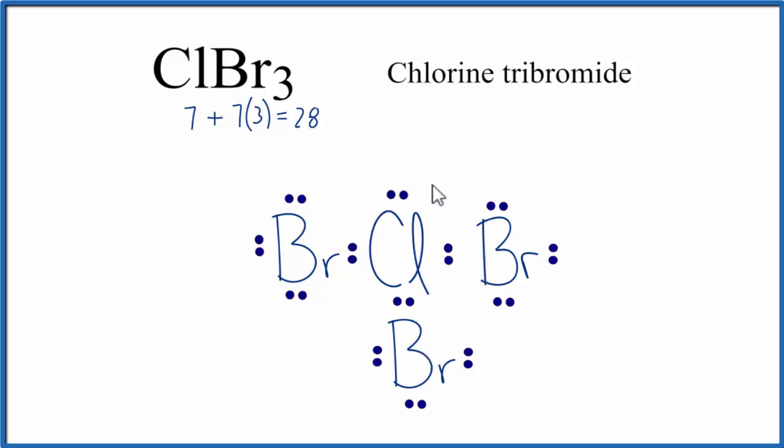We can solve this problem because chlorine can have an expanded octet. So we can put this other pair of electrons on the chlorine atom, and we'll have used all 28 valence electrons.